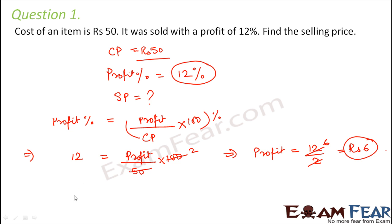So now that you know the profit, you know the cost price, you can very easily find out selling price. Selling price would be equal to cost price plus profit. So therefore it would be Rs 50 plus 6. So the selling price of the item would be Rs 56.